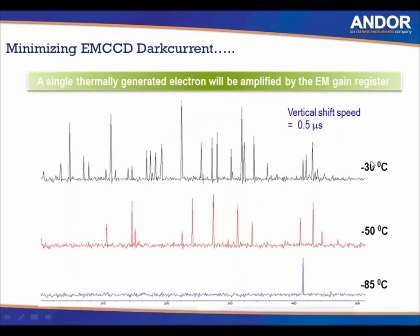Line profiles at minus 30, minus 50, and minus 85 show dark noise spikes at minus 30 which are progressively reduced. The vertical shift speed at 0.5 microseconds is also important because shifting charge faster from row to row in the sensor minimizes clock-induced charge. Clock-induced charge can be minimized by shifting the charge faster throughout the sensor, which can be controlled in software. At 0.5 microseconds, there is no clock-induced charge — only dark noise gives spikes in line profiles, which are removed at minus 85.